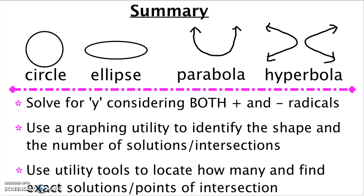In summary, here is a picture of what each of these shapes looks like. Eventually, probably in your pre-calculus class, you'll have to recognize the equations of these types of shapes. But right now, I just want you to be able to see an ellipse on a screen and identify it. We're going to solve for y considering both the positive and negative radicals, use a graphing utility to identify the shape and number of solutions, and then use the tools in the graphing calculator to locate exact points of intersection. You'll do all three things on the worksheet in class.